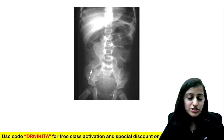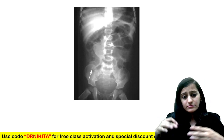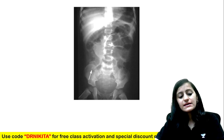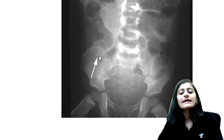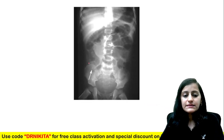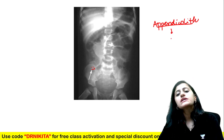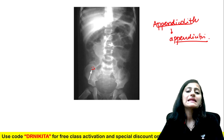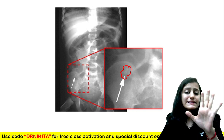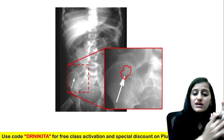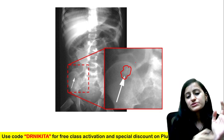In a child presenting with RIF pain, tenderness at McBurney's point, and classical history of appendicitis, if we see a calcification in the right iliac fossa — this is suggestive of an appendicolith. An appendicolith predisposes to appendicitis if it obstructs the appendix. The calcification appears overlapping the iliac bone; remember that on radiograph, because it is two-dimensional, there is superimposition of structures — something appearing in the iliac bone may actually be in the bowel loops.